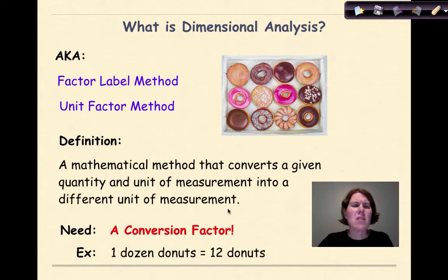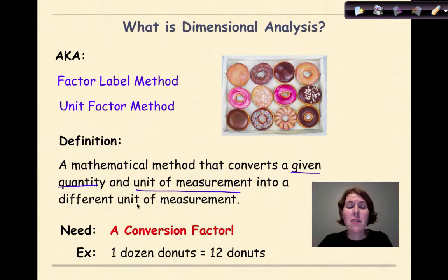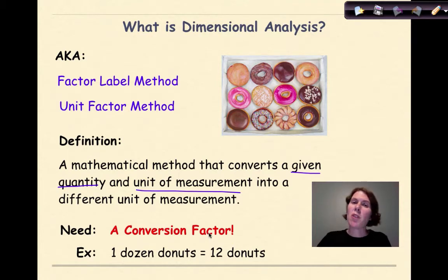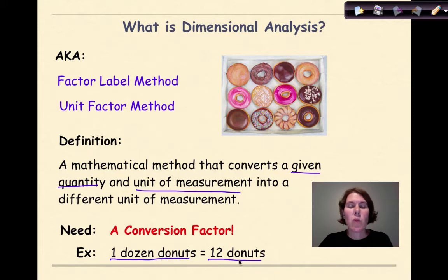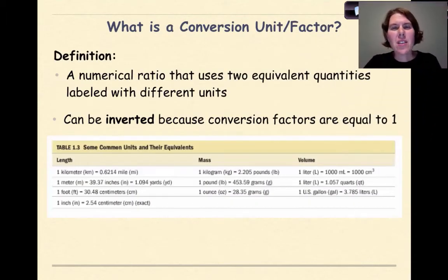Dimensional analysis is a mathematical method that converts a given quantity and an associated unit of measurement into a different unit of measurement. A conversion factor that most of us are familiar with is the idea of going to a donut shop and buying a dozen donuts. When we hear 'I'm coming home with a dozen donuts,' most of us understand that is 12 donuts. So the conversion factor here is knowing that one dozen equals 12. Here I have an image of a dozen donuts — when we talk about a dozen, we think 12.